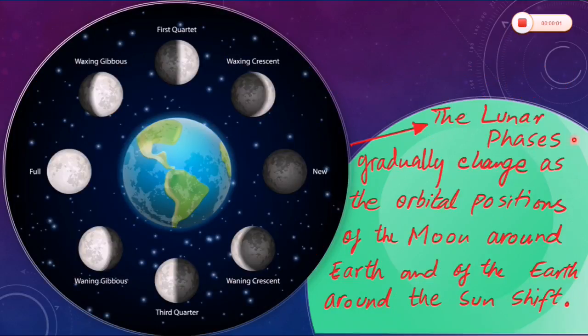Now here the lunar phases are shown. It can be seen that these phases gradually change as the orbital positions of the Moon around the Earth and of the Earth around the Sun shift.